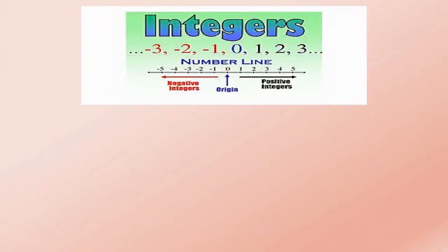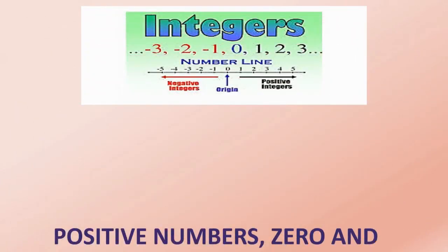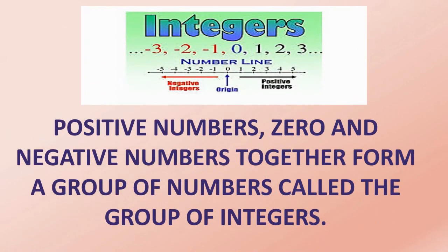So, what are integers? Positive numbers, 0, and negative numbers together form a group of numbers. These numbers we call as integers.